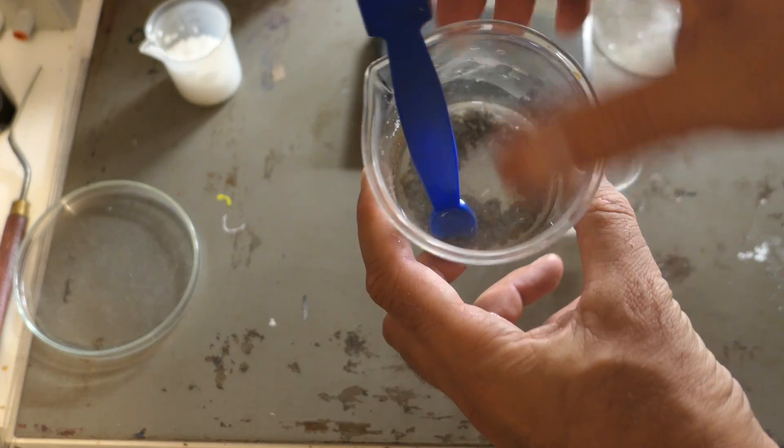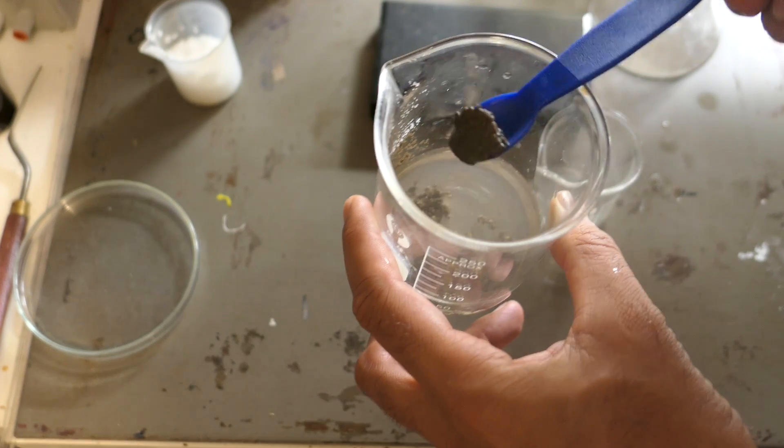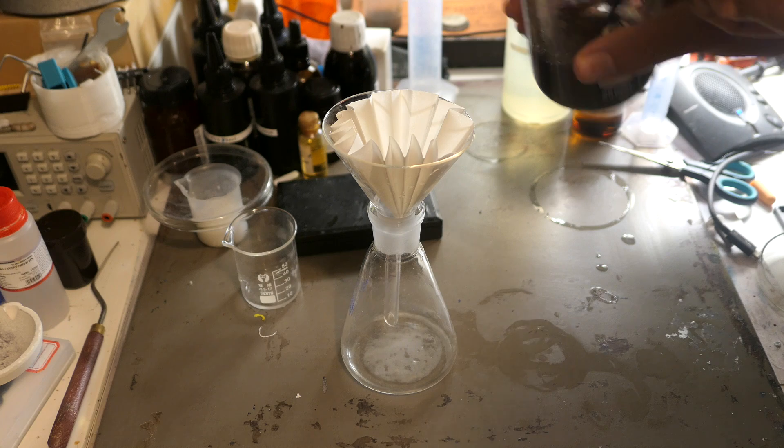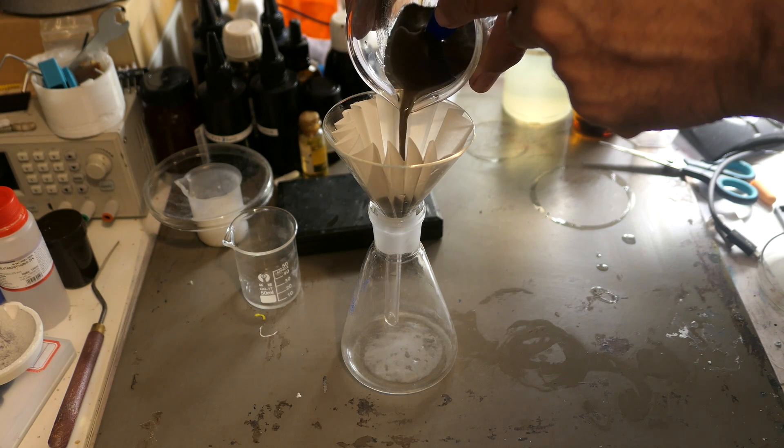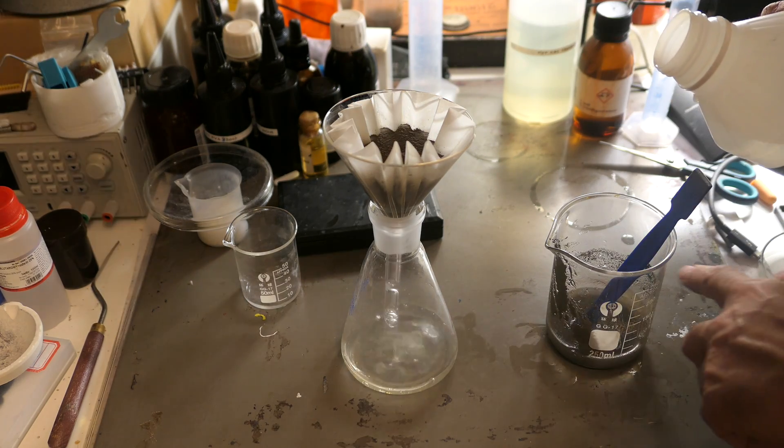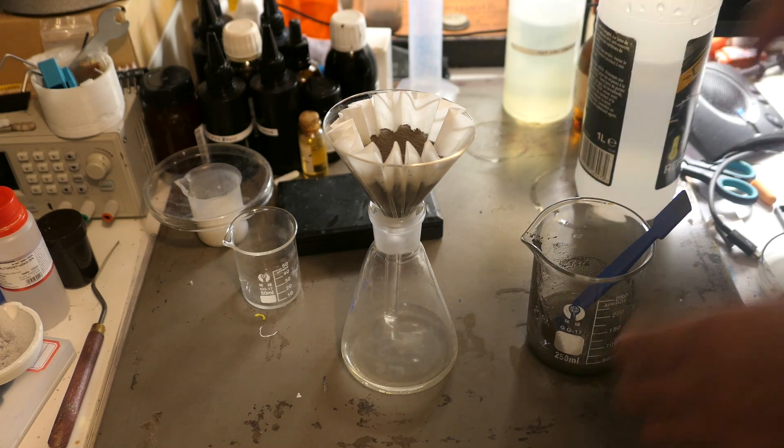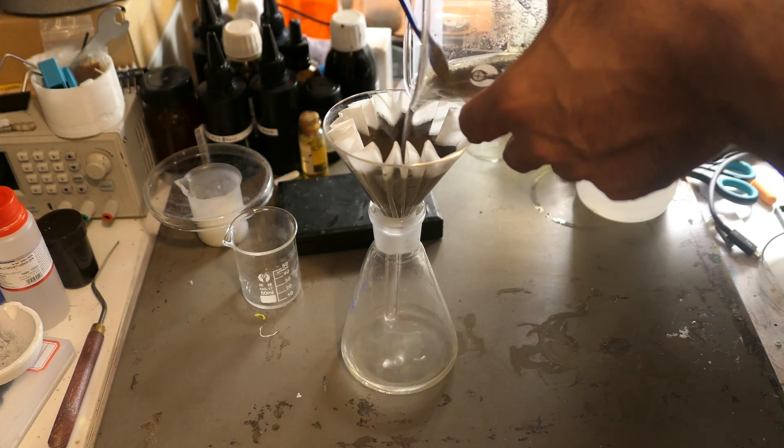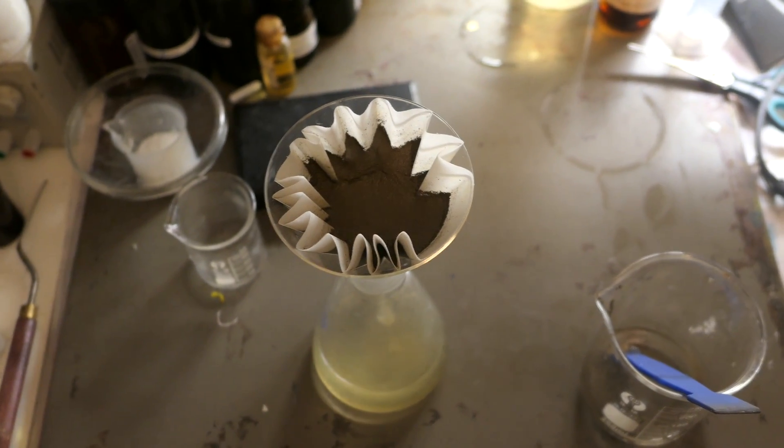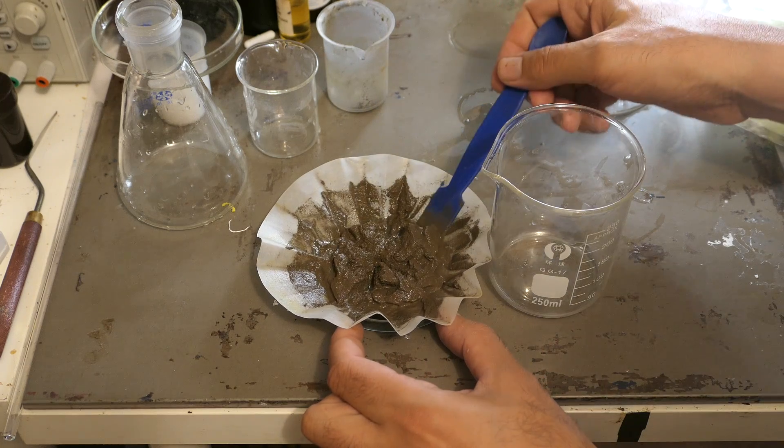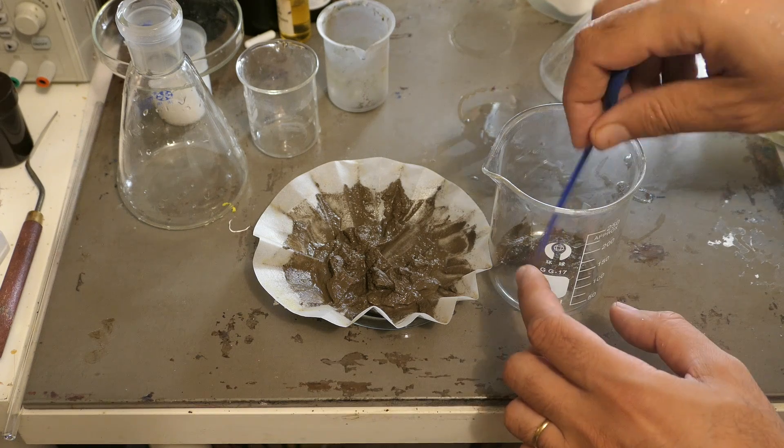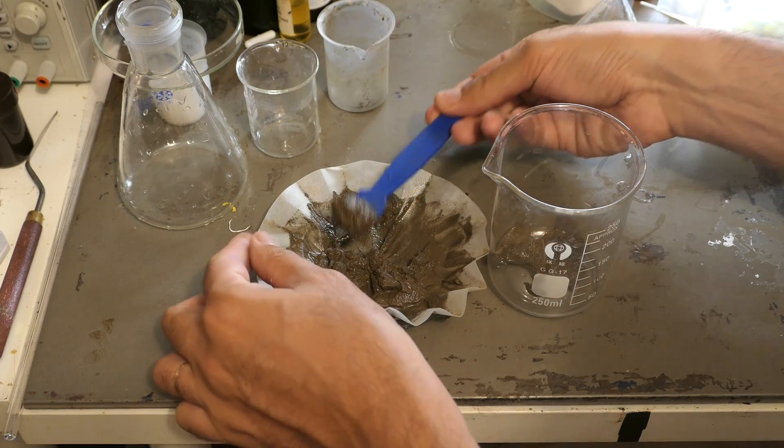We'll try to recover this precipitate. To do this, we'll need to filter and rinse it several times to obtain as pure a solid as possible. Rinse it with distilled water to remove impurities. Here's the silver oxide we got. It can be drained or even dried to preserve it. But for the next step, we'll collect it with a spatula and place it in a beaker.